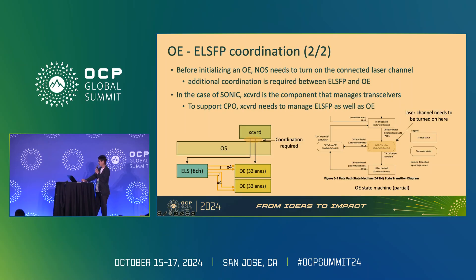A similar situation arises when activating the OE. In the bottom right, you can see the state transition diagram of the CMIS AppSel state machine, which includes a state called DP TX Turn On. In this state, CMIS expects the transceiver to output laser light. In the case of a pluggable transceiver, the laser is included internally so it's easy to control via the transceiver's firmware. However, when using an external laser source with CPO switches, the NOS needs to handle this coordination — in a sense, the NOS has to take over part of the transceiver's firmware functionality. In SONiC, the transceiver daemon controls the transceivers, so to support CPO switches, the transceiver daemon will need to control both the OEs and the ELSFPs.